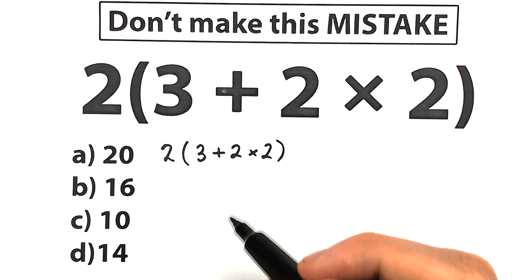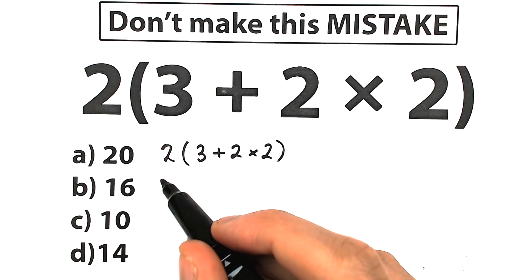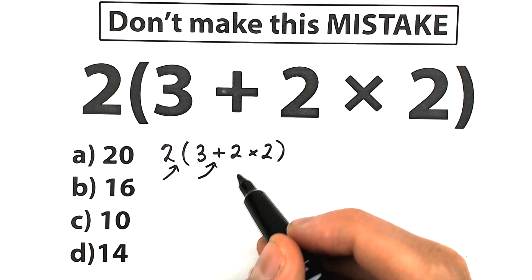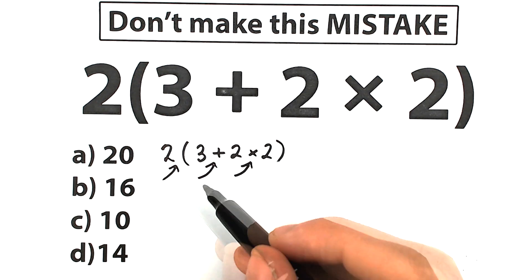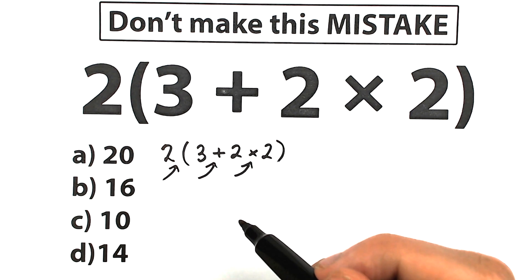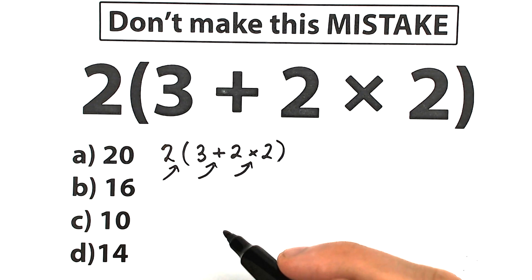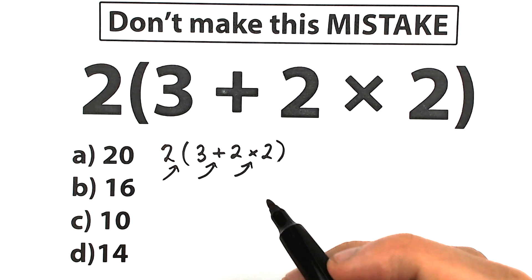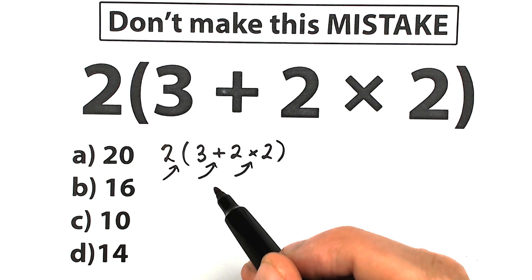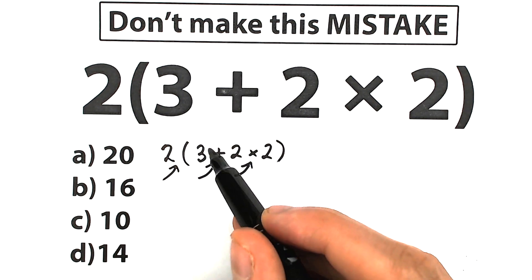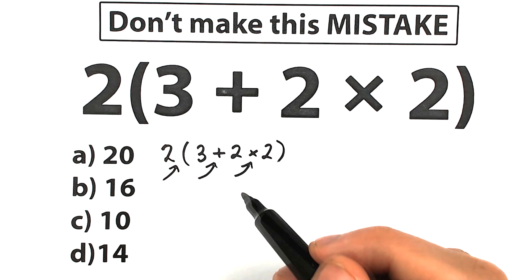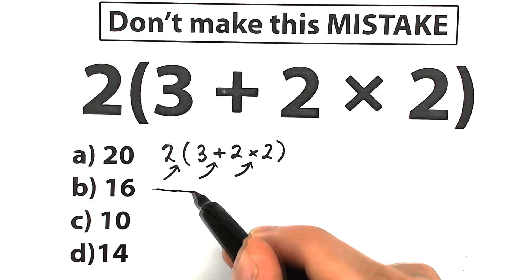A lot of students don't know the correct order to do this problem. Right here we have multiplication, right here we have addition, and right here we have multiplication — so obviously whatever order of operation we select is going to create a different answer. In math, we should know the one and only correct order of operation, because if you start with multiplication you get one answer, and if you start with addition you get another, and it turns into a big argument.